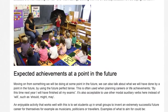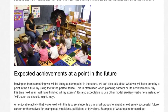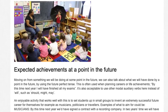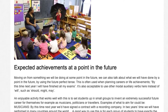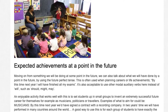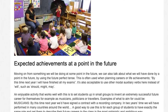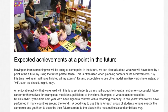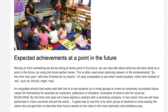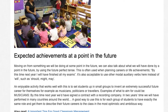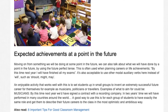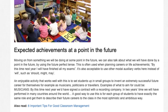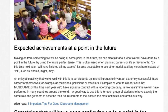Expected Achievements at a Point in the Future. We can talk about what we will have done by a point in the future using the future perfect tense — often used when planning careers or life achievements, e.g., 'By this time next year I will have finished all my exams.' It's also acceptable to use other modals like should, might, or may. An enjoyable activity is to set students up in small groups to invent an extremely successful future career — as musicians, politicians, or travelers — and describe it to the class as optimistically and ambitiously as possible. For example: 'By this time next year we will have signed a contract with a recording company. In two years' time we will have performed in many countries.'